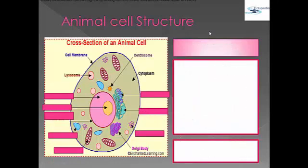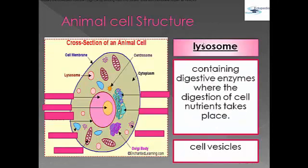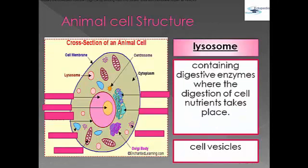After the Golgi body, we have the lysosome, also called cell vesicles. It contains digestive enzymes where the digestion of cell nutrients takes place.